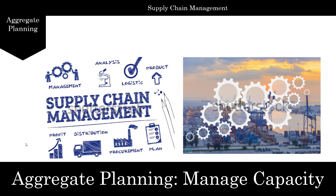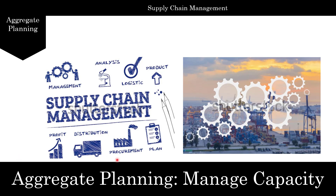Hello everyone, welcome to Supply Chain Management. In this lecture and module, we're going to deal with aggregate planning. Aggregate planning comes directly after forecasting — your forecast output becomes your input for aggregate planning. In aggregate planning, you're going to plan for the next six months, three months, or a year about what you need to produce, what your production plan is going to be, how many employees you need, and what you need to put in inventory. This is all about managing your capacity.